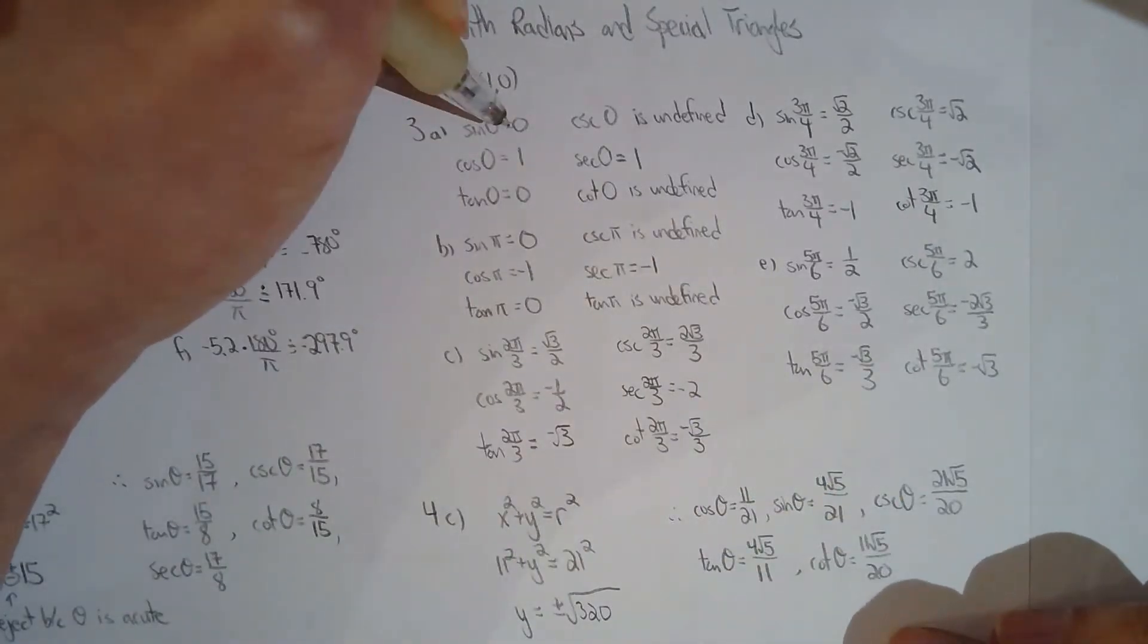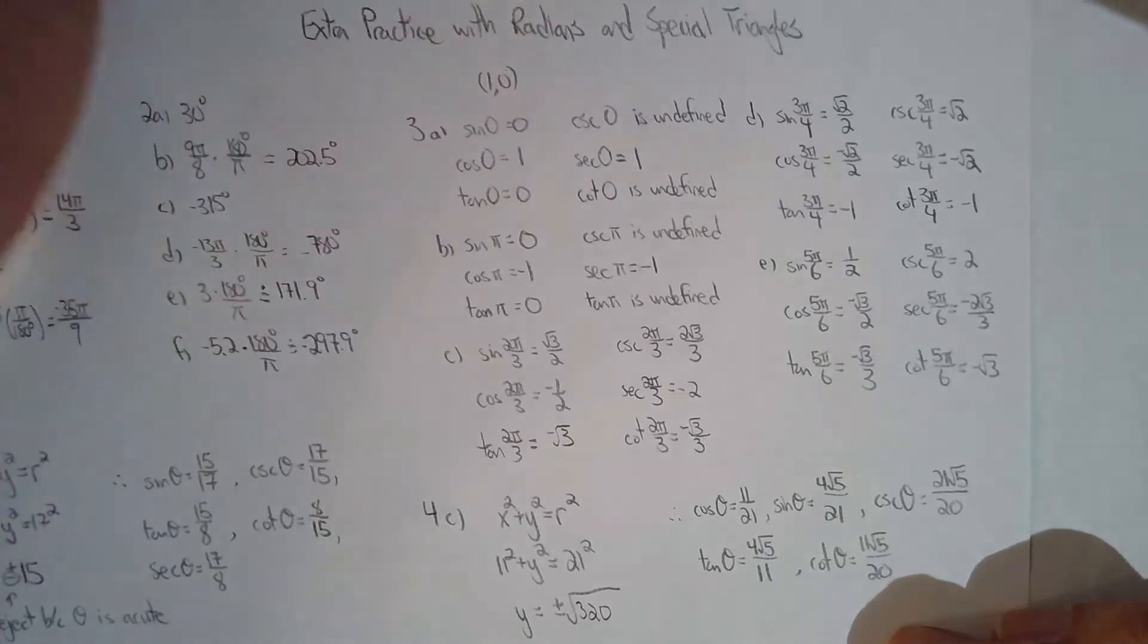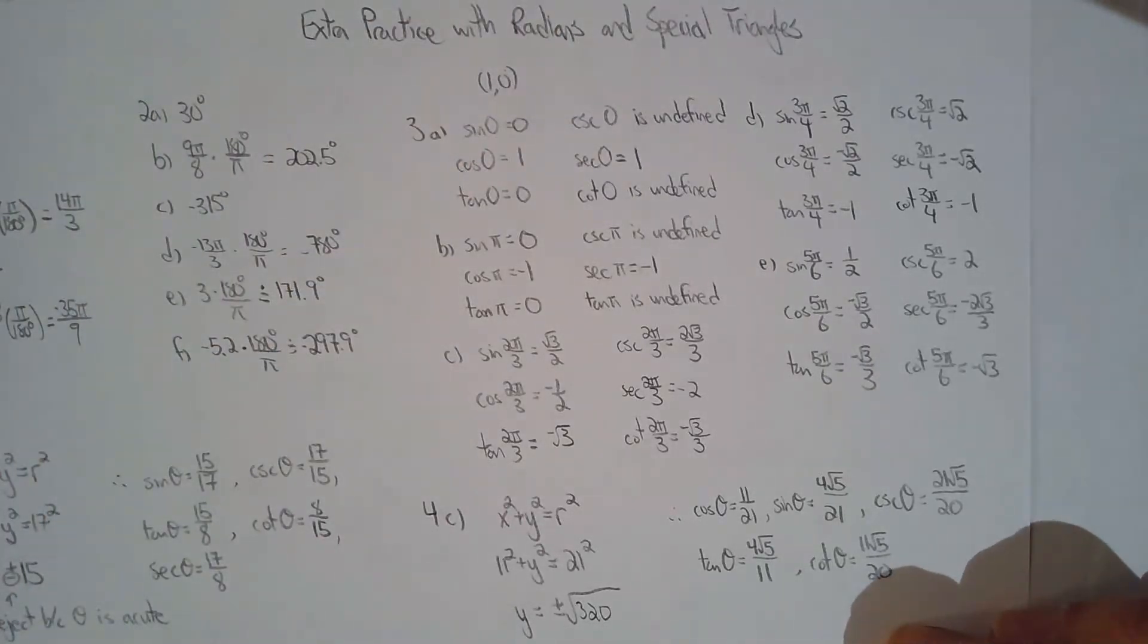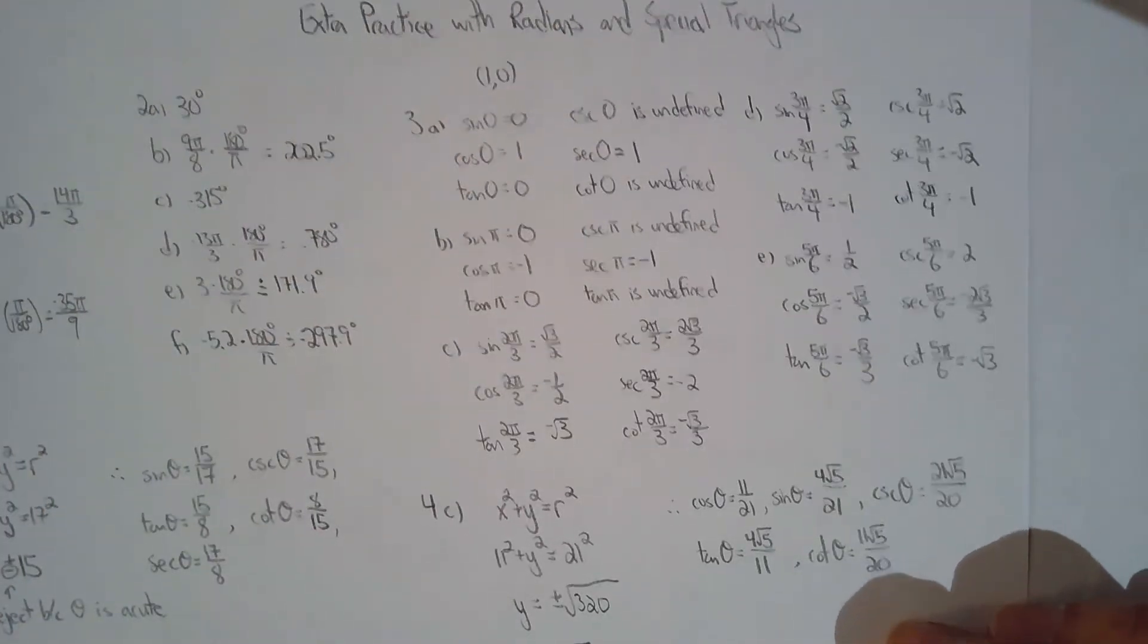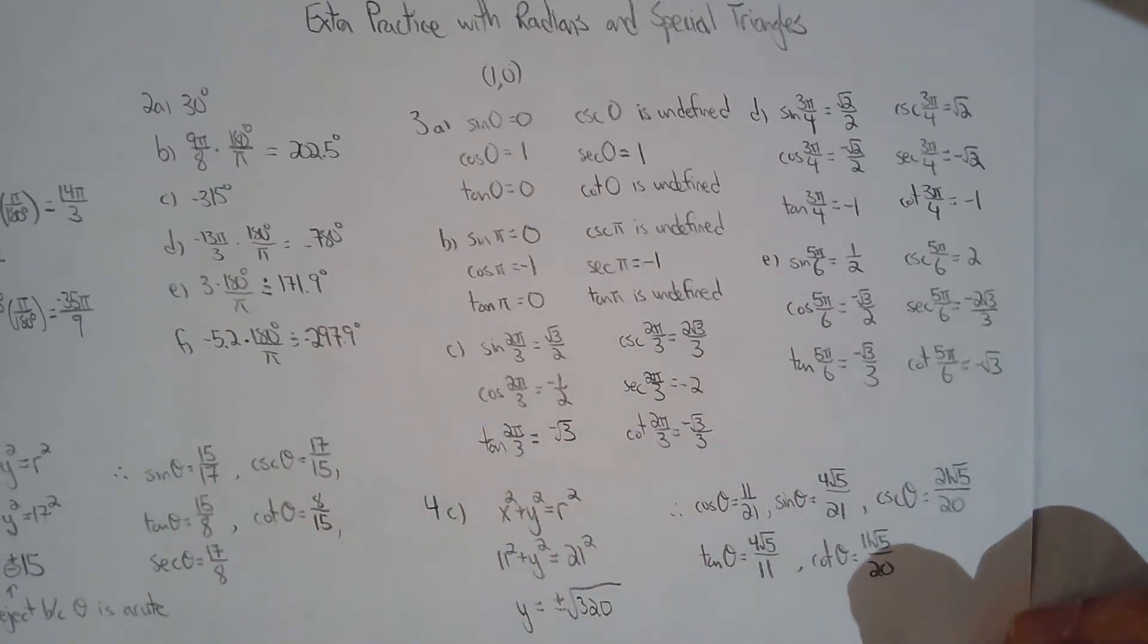So I'm going to write it down here: (1, 0). Since the y value is zero, sin(0) = 0, and then the x coordinate is one so cos(0) = 1, and tan(0) is zero because that's y over x. Once you have sine, cosine, and tangent you can take the reciprocal to find cosecant, secant, and cotangent.